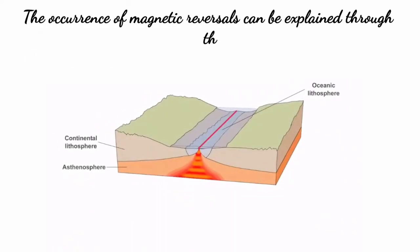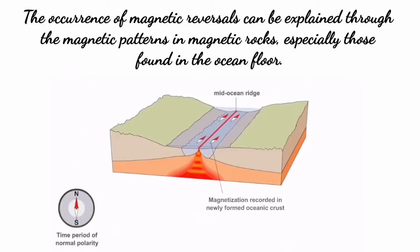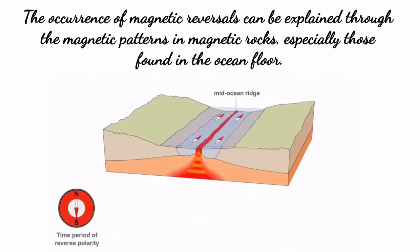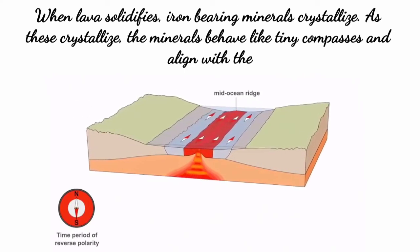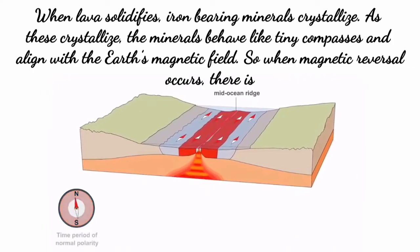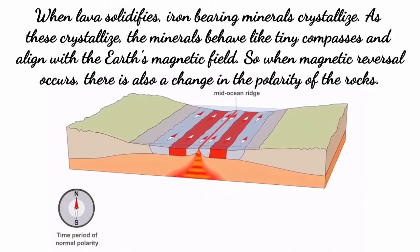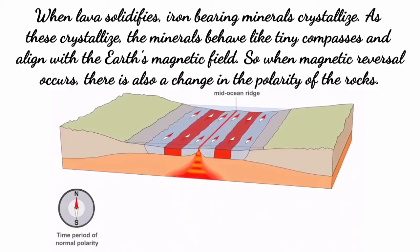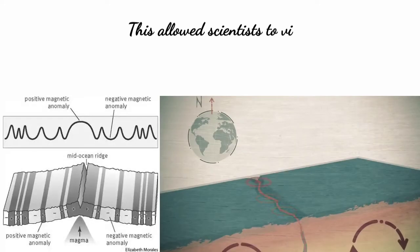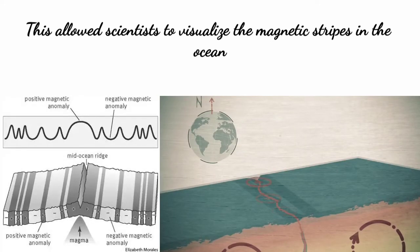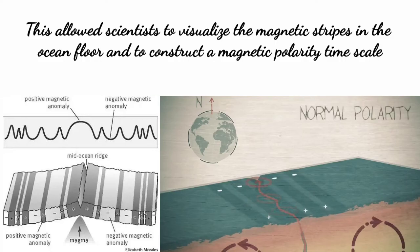The occurrence of magnetic reversals can be explained through the magnetic patterns in magnetic rocks, especially those found on the ocean floor. When lava solidifies, iron-bearing minerals crystallize. As these crystallize, the minerals behave like tiny compasses and align with the Earth's magnetic field. So when magnetic reversal occurs, there is also a change in the polarity of the rocks. This allowed scientists to visualize magnetic stripes in the ocean floor and construct a magnetic polarity timescale.